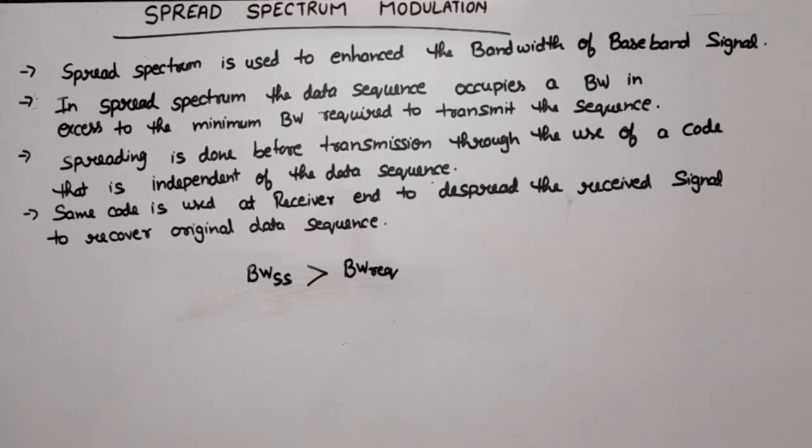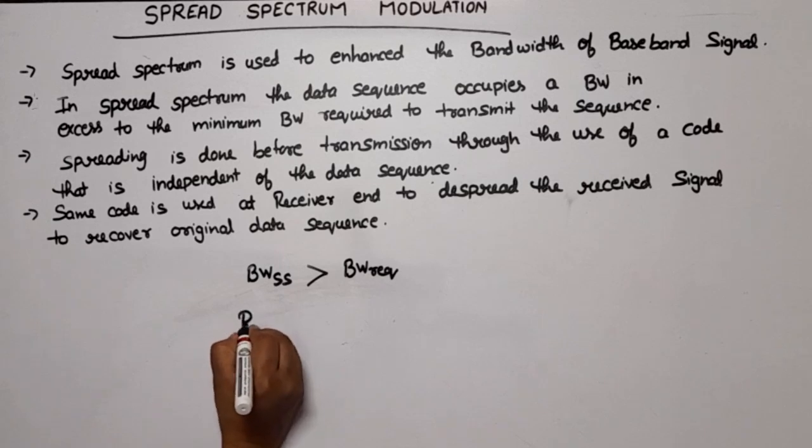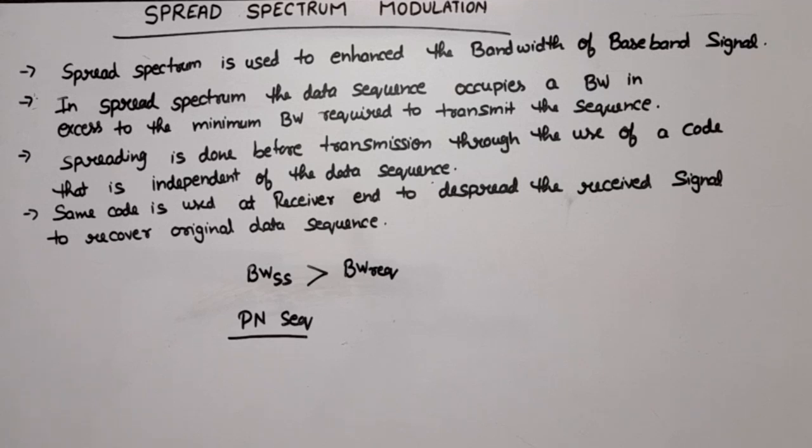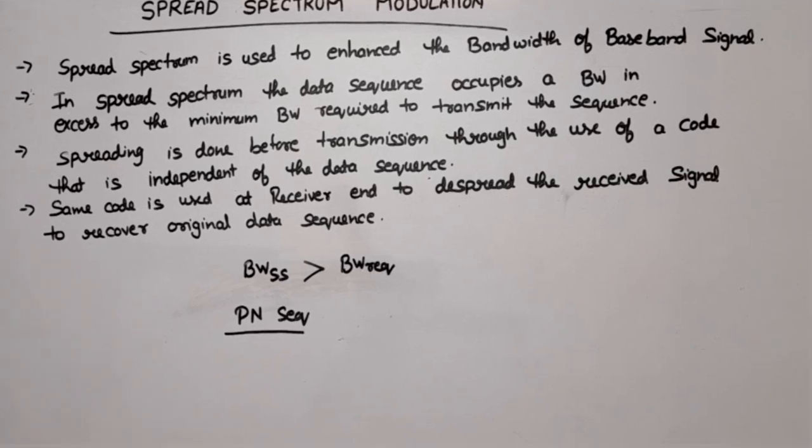Now why we are increasing the bandwidth? Because in case of narrow bandwidth there is more chance of interference. Now how we are spreading the bandwidth? For spreading the bandwidth we use a code that is independent to the data sequence. The code we use has nothing to do with data sequence. That is called PN sequence. We take these randomly, that's why this is called pseudorandom noise sequence. We add it randomly, it has nothing to do with the message.